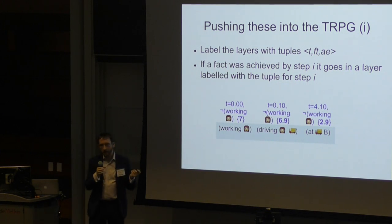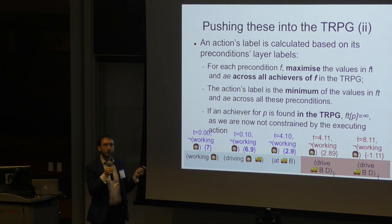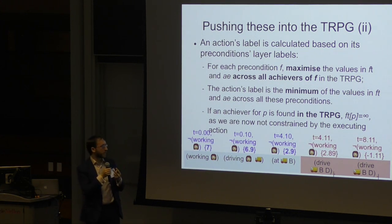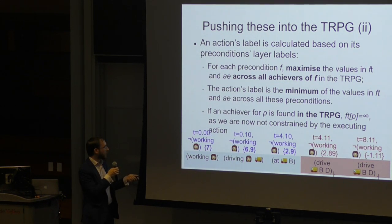Slightly more involved is how you calculate the label on an action. If I just talk through the example, it might be slightly clearer. To drive from B to D, we have three preconditions. The driver is working, the driver is in the truck, and the truck is at B. The worst case amongst all of those for how long we have until this working fact is deleted is 2.9. So we can start this at 2.89, recalling that you have to leave a small amount of time between a fact becoming true and being able to use it for a precondition. So that's to start epsilon values taken off there.